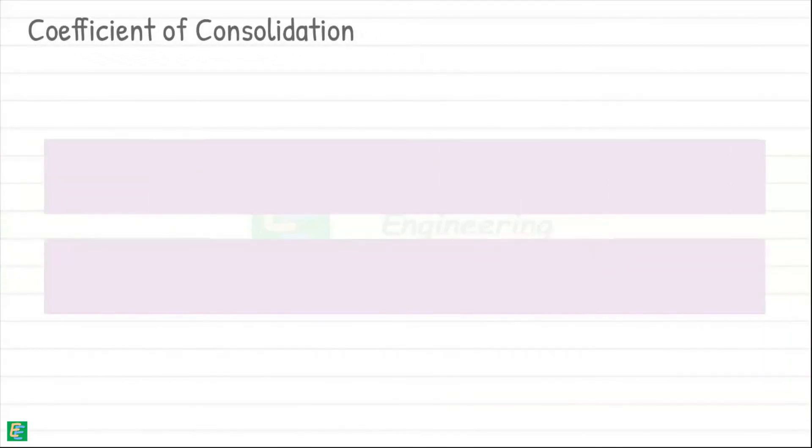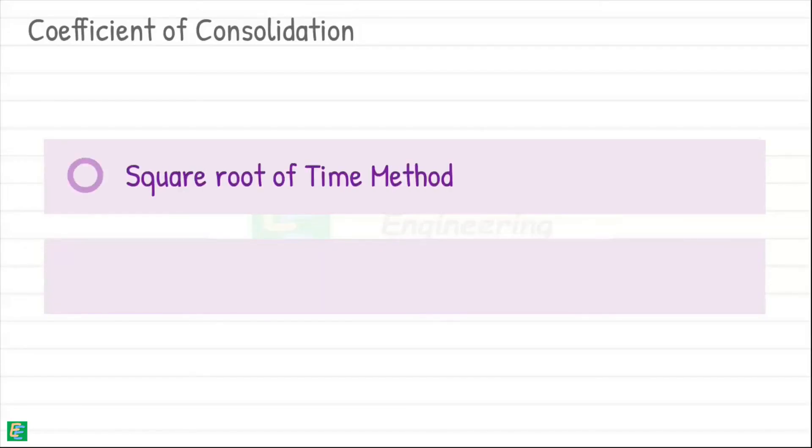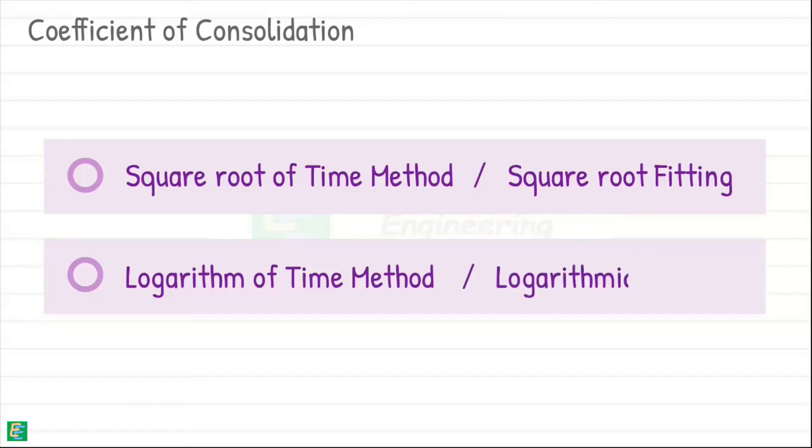There are two methods for determining the coefficient of consolidation using the graph. One, square root of time method, which is also called square root fitting. Second is logarithm of time method, which is also called logarithmic fitting.